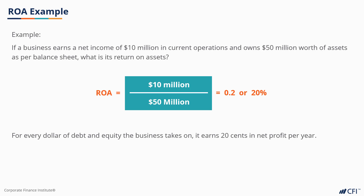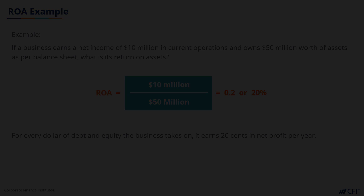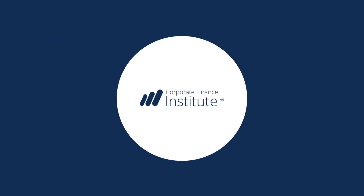For every dollar it earns, it has 20% of net profit after depreciation and amortization of those assets is taken into account. Hopefully this has been a helpful guide for you on how to calculate ROA.